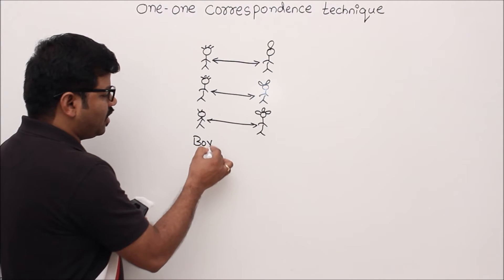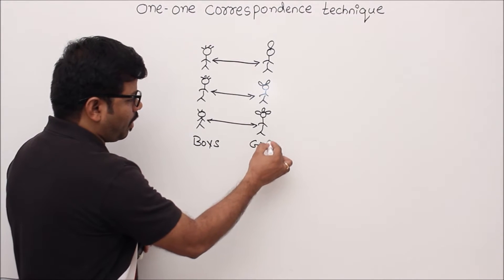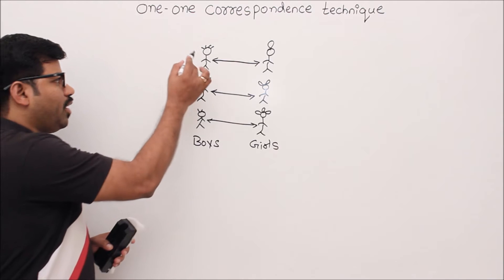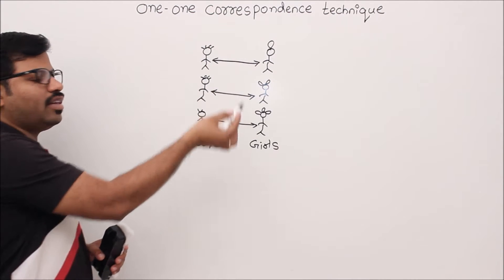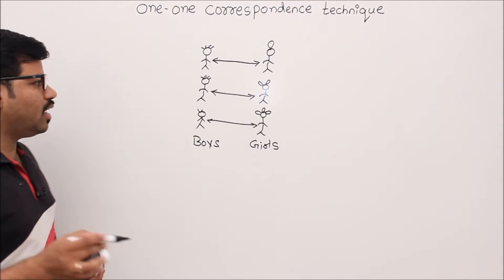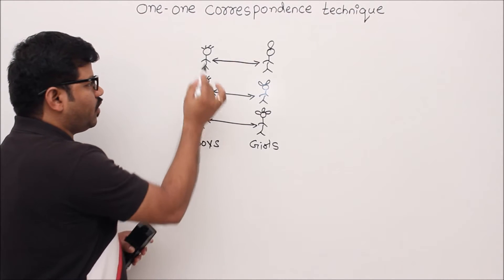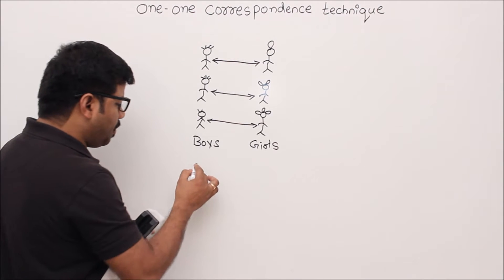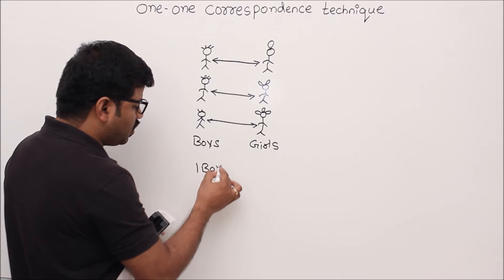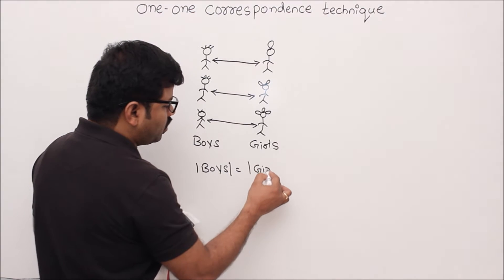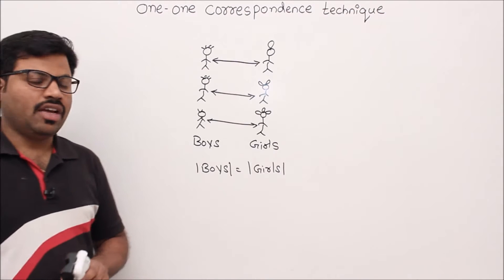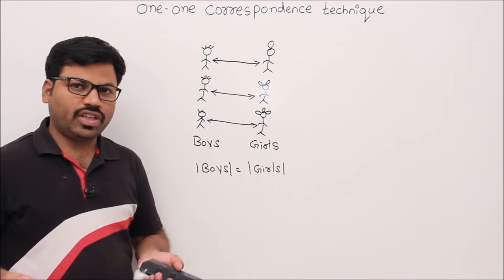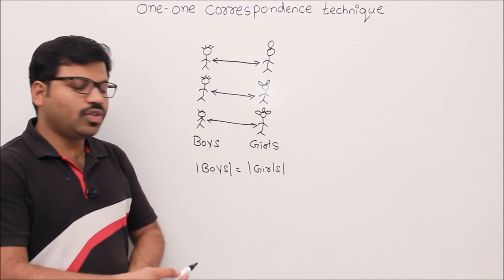So try to understand the meaning of one-to-one correspondence: for every boy there is a mapping girl, and for every girl there is a mapping boy. Then you can understand automatically that the number of boys equals the number of girls. That is one important property of one-to-one correspondence — whenever there is a one-to-one correspondence between two sets, it is like proving that these two sets are equal.